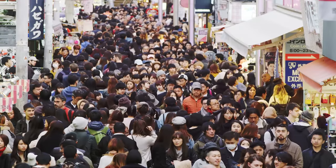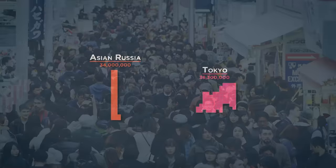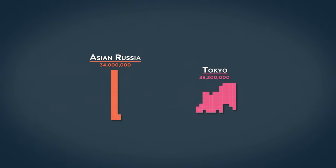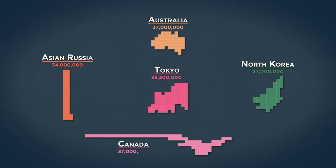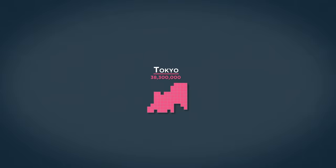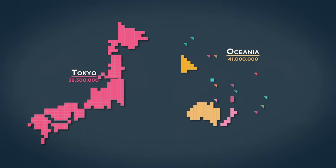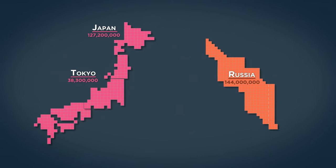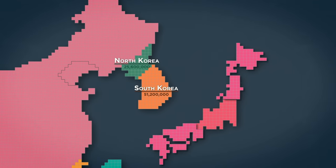The sheer scale of Tokyo as a city is difficult to comprehend. Besides just the Asian part of Russia, there are more people who live in Tokyo than live in Australia, North Korea, or even Canada. Put another way, Tokyo's population is very similar to the entire combined population of Oceania, which is half a percent of the entire human population in one city. Japan's population as a whole is similar to the population of Russia, while right next door, South Korea's population is more than double that of North Korea's.